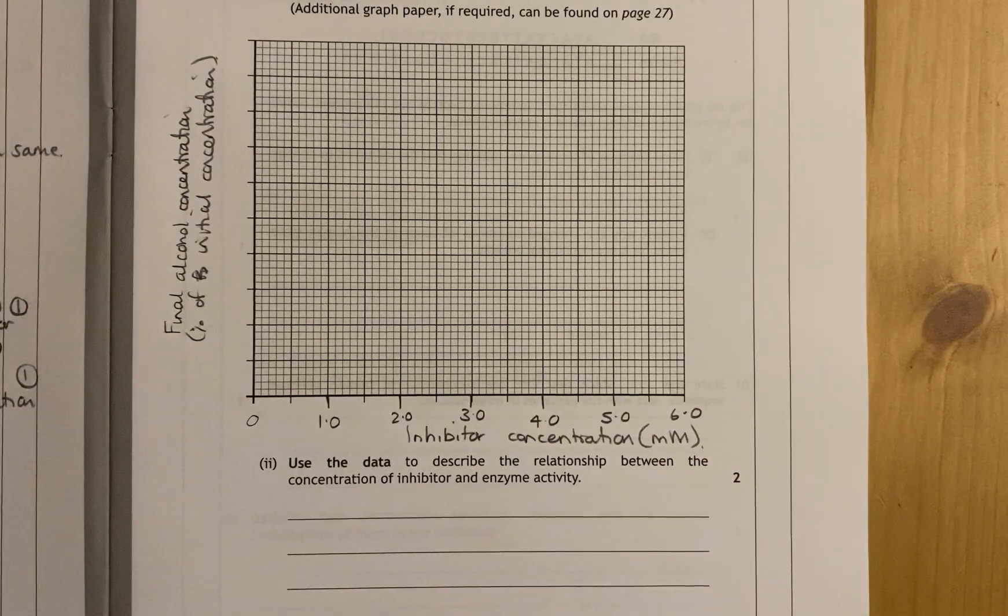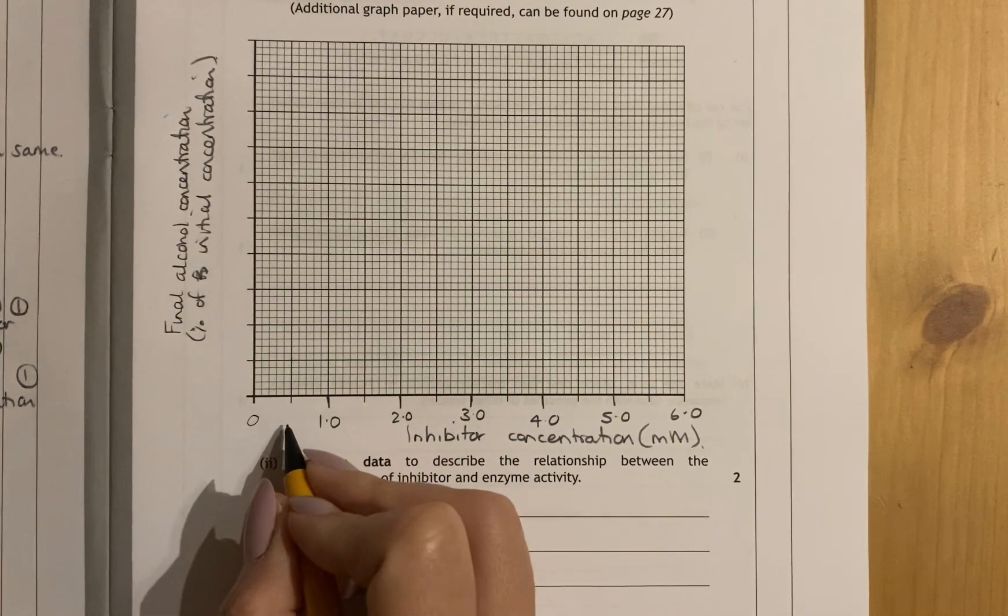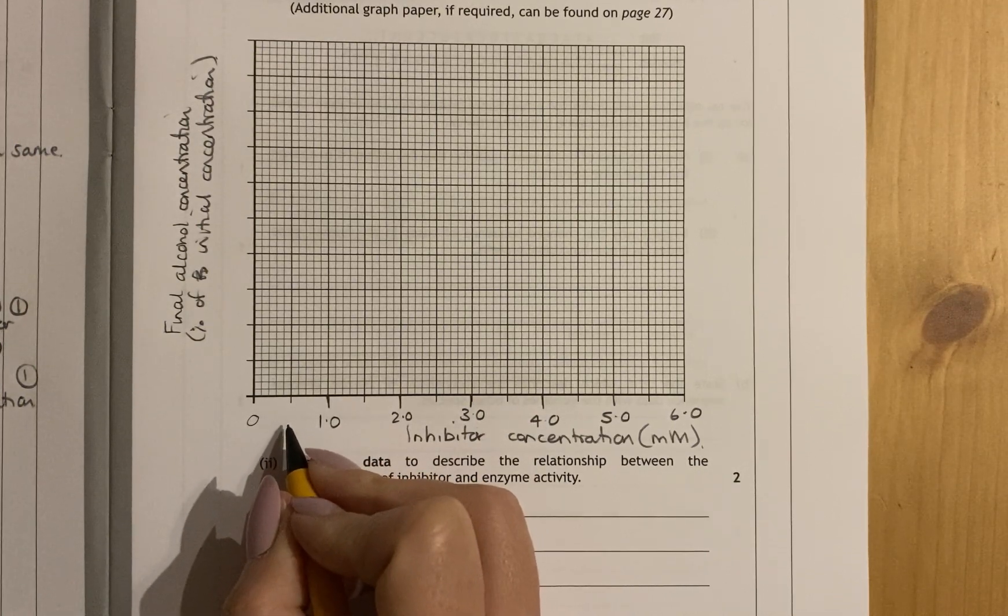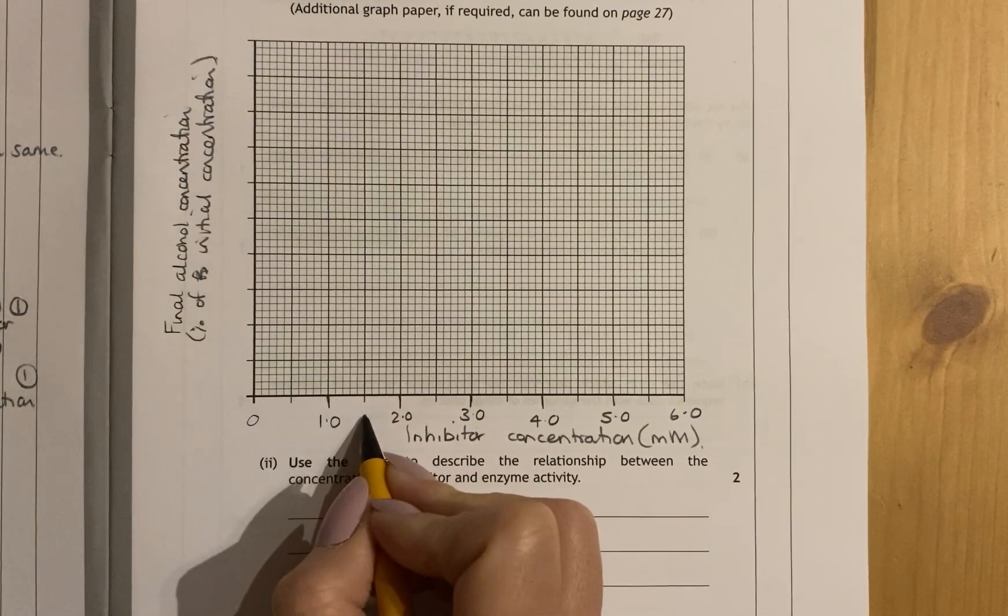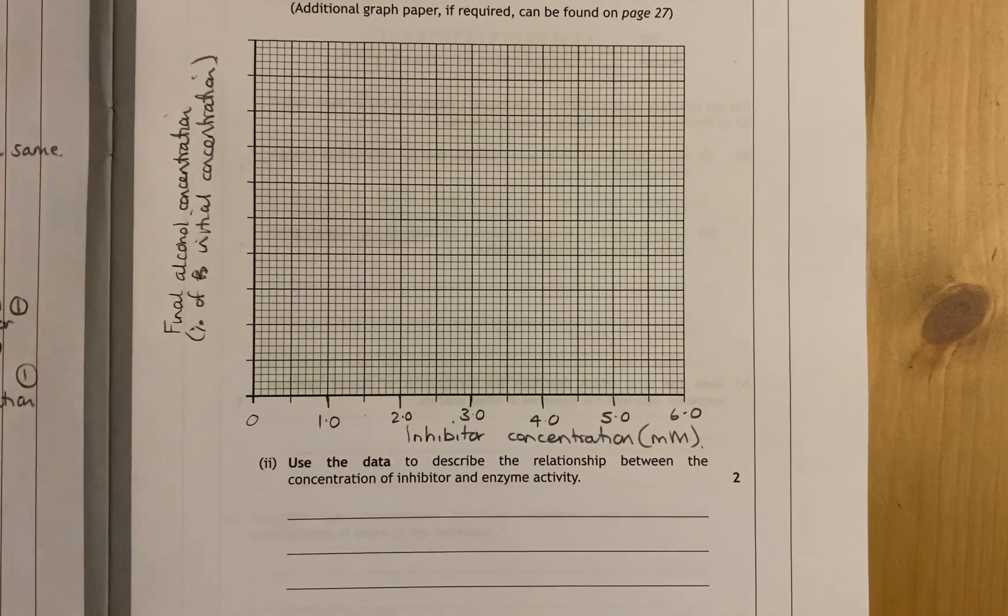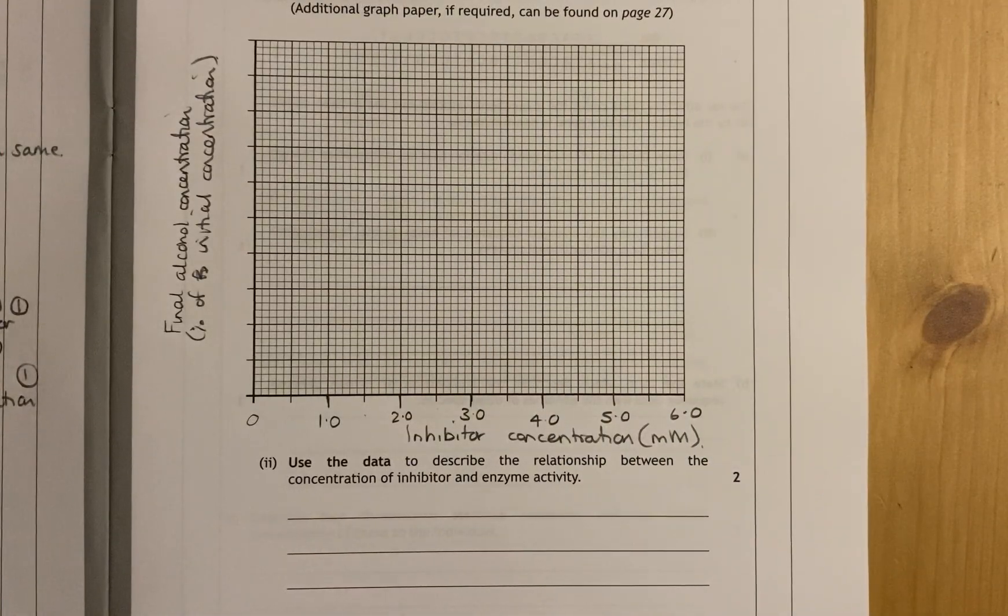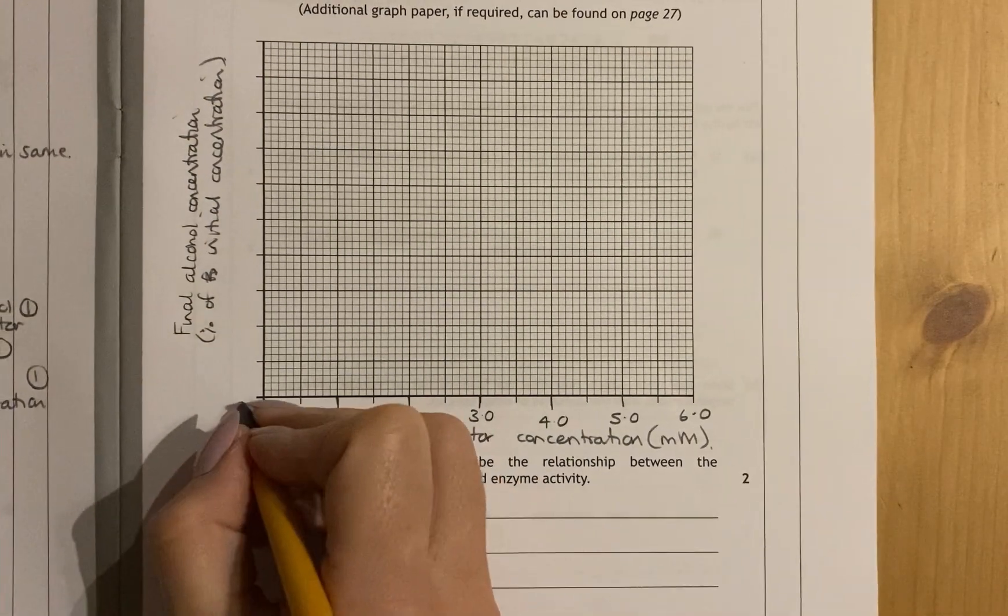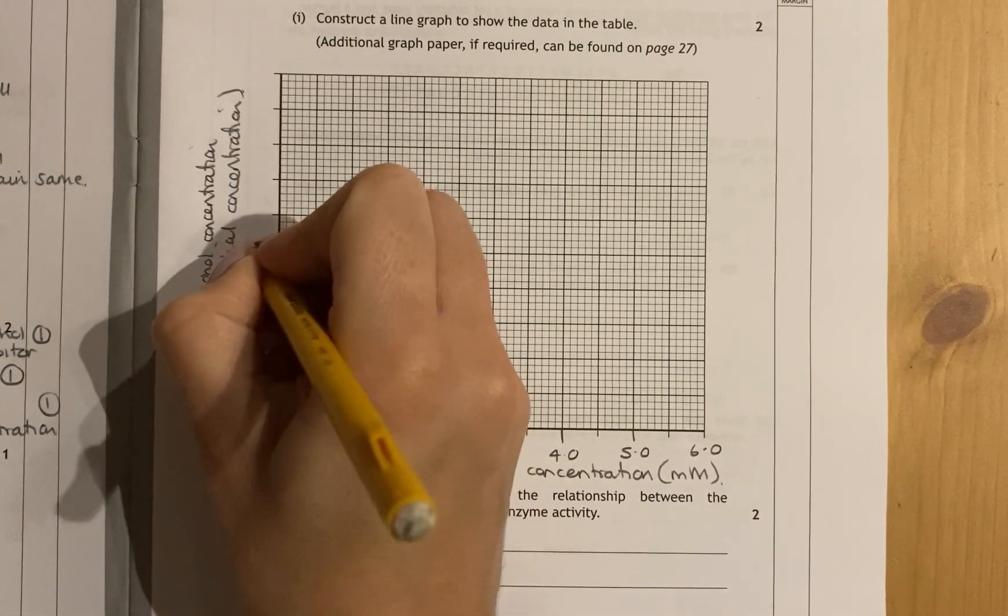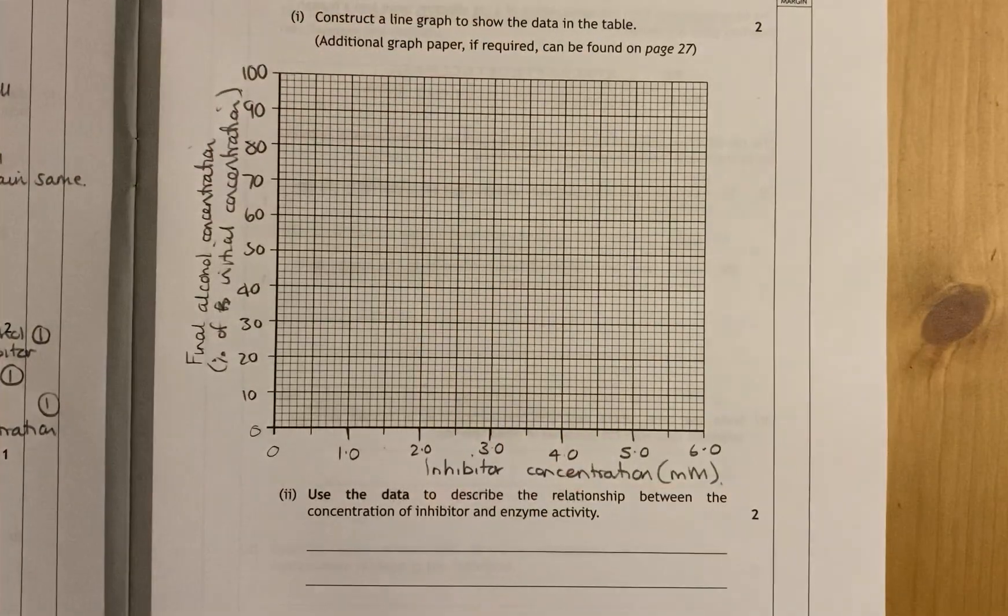Now this graph actually caught a lot of people out in the first year when it came out, because when they did the divisions, they did 0.05 or something like that in here. The numbers aren't quite correct. So make sure that when you're doing the scale, you would have 0.5 here, then 1.5, then 2.5. Then at the side, we have final alcohol concentration from 20 to 100 percent. So again, if our scale would work and we can fit it, we can do from 0 right the way up to 100, going up in tens.